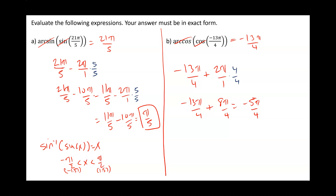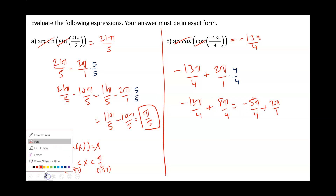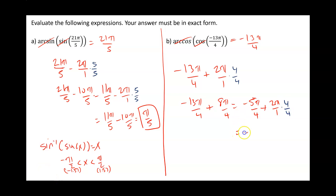So we do the same thing — to find a coterminal angle, we're going to add 2 pi over 1. Multiplying numerator and denominator by 4, this gives us negative 5 pi over 4 plus 8 pi over 4, which is 3 pi over 4. Now, 3 pi over 4 is between negative pi over 2 and pi over 2, so this is going to be our answer.